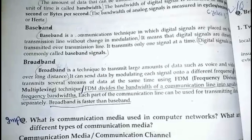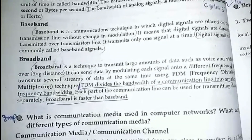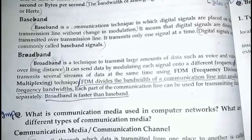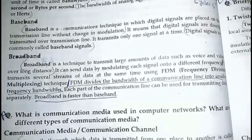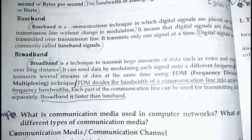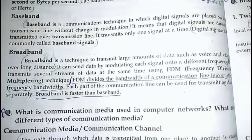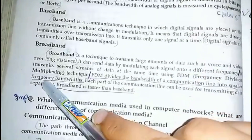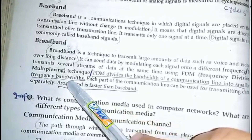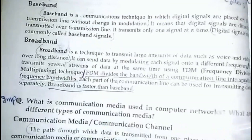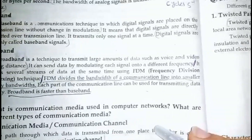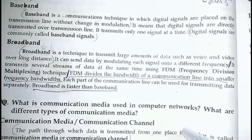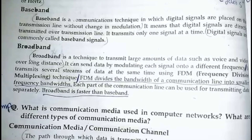Broadband uses Frequency Division Multiplexing, so every single signal will be modulated — that means the signal will be changed into another form. Every single stream of data is divided into small parts, and those parts are modulated before sending. With different frequency bandwidths, data is sent in small groups. Each part of the communication line can be used for transmitting data separately, and broadband will be faster than baseband.